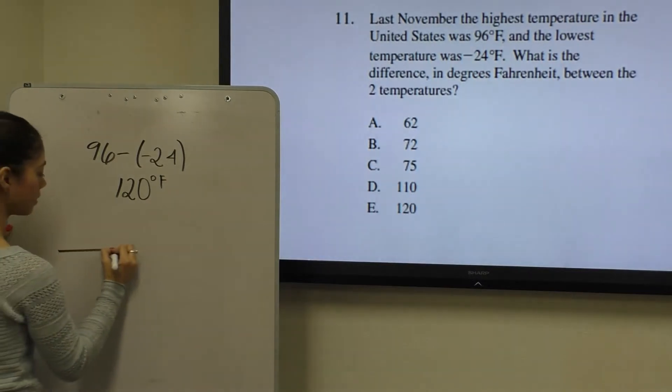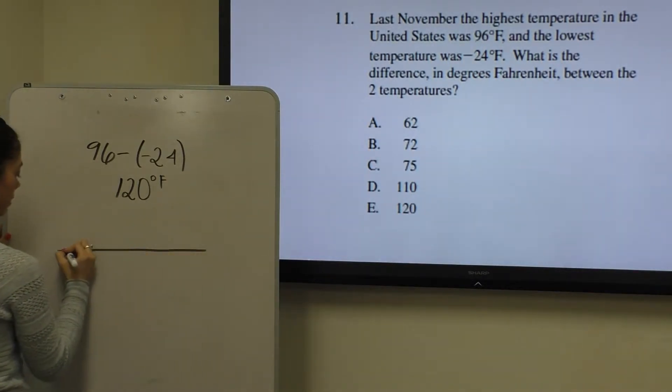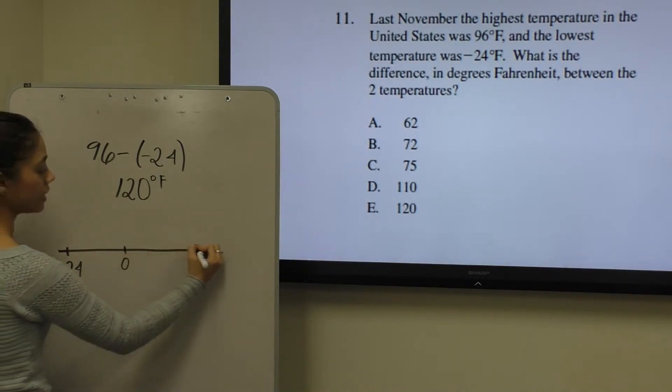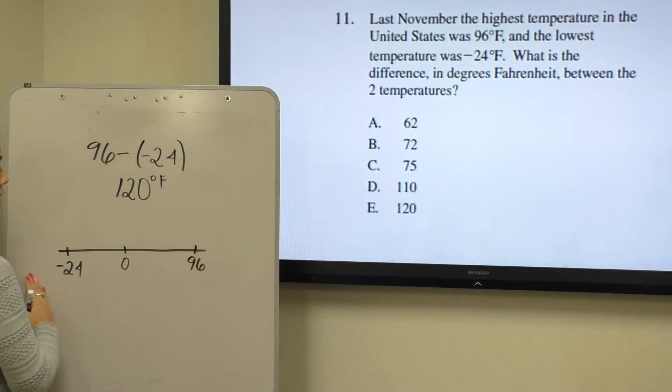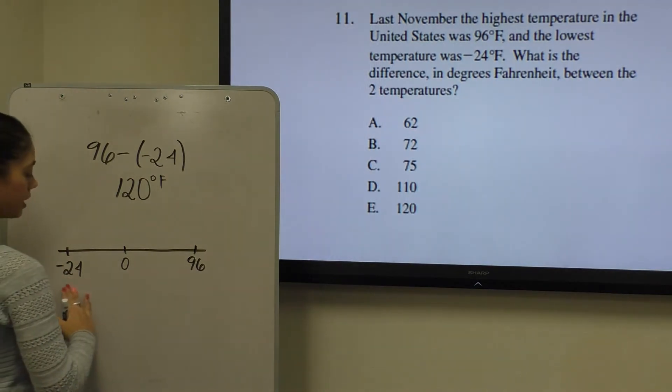So they're telling us that we had a negative 24 degree temperature and we ended up at 96 degrees. They're asking for the difference between these two temperatures, meaning what values are between negative 24 and 96.